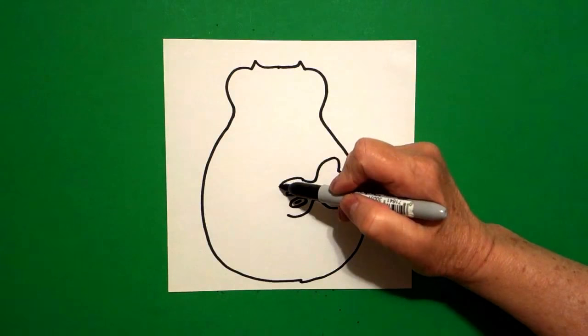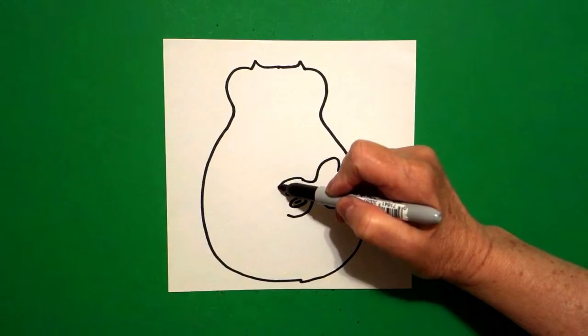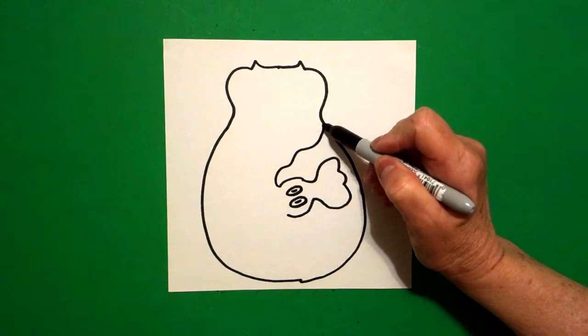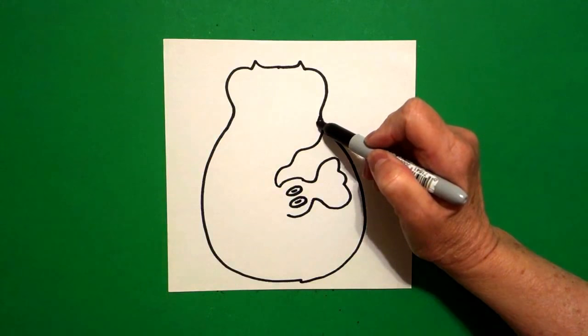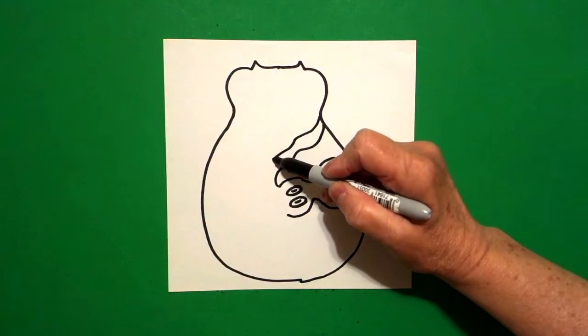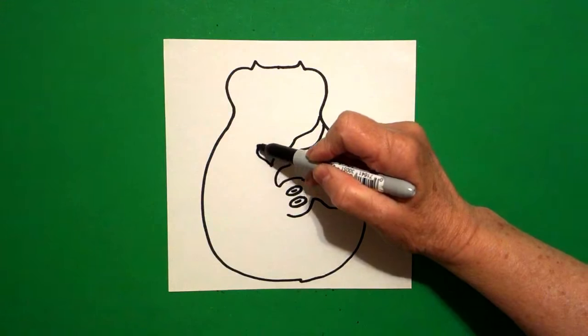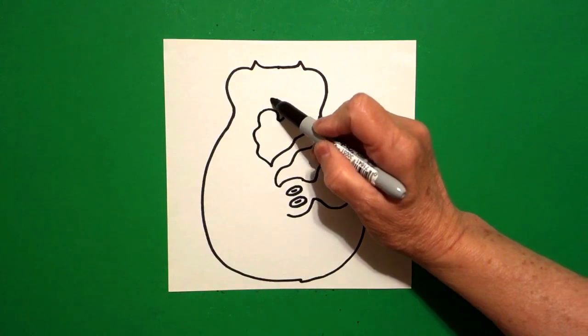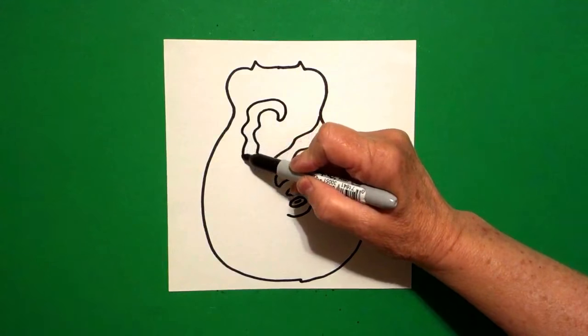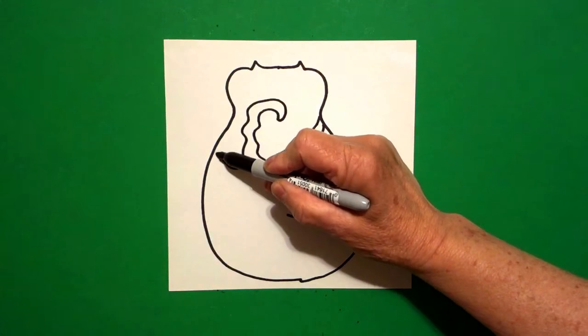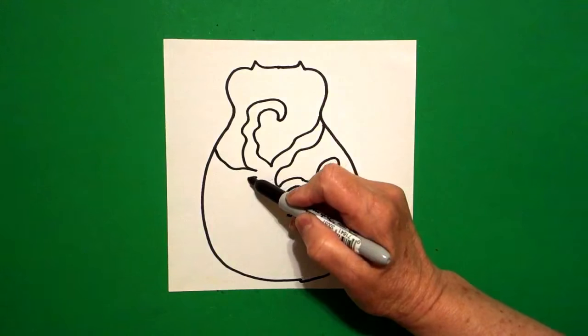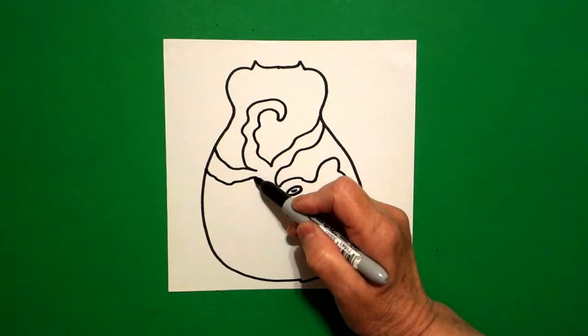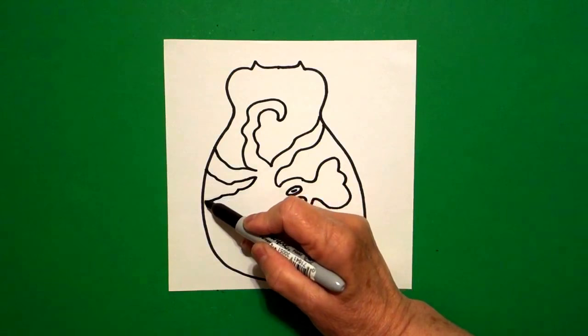Okay, right here at the top, I'm going to draw a wavy wavy line up, jump over, wavy wavy line down, wavy line up, curl it, wavy wavy line down, wavy line down, wavy line up, come back in, wavy line down, wavy line out, come back in.